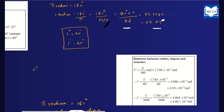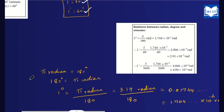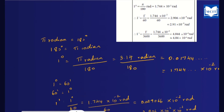One degree is 60 minutes and one minute is 60 seconds. The relation between radian, degree and minutes: pi radian equals 180 degrees, so 1 degree equals pi divided by 180 radian, giving a value of approximately 1.744×10⁻² radian.